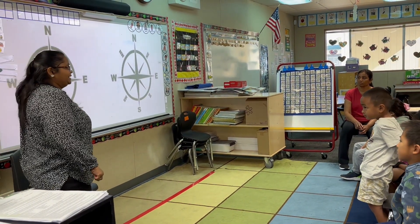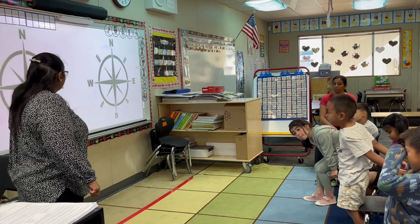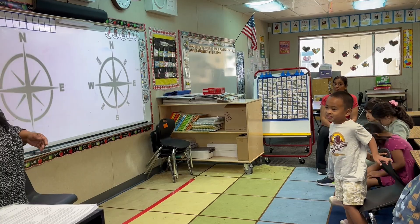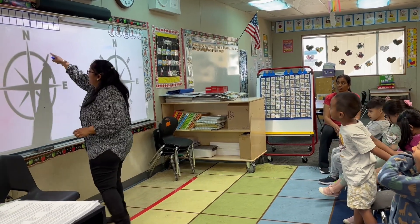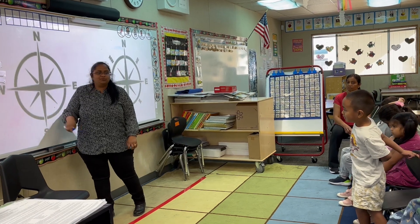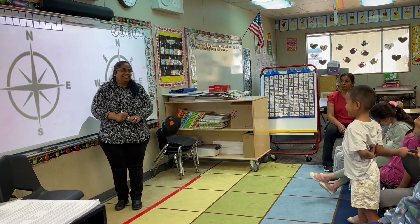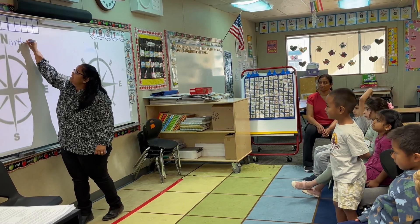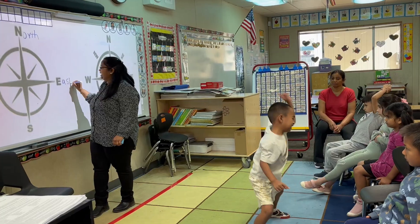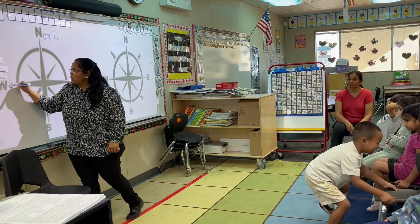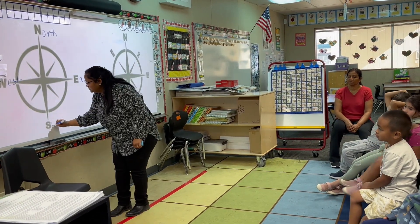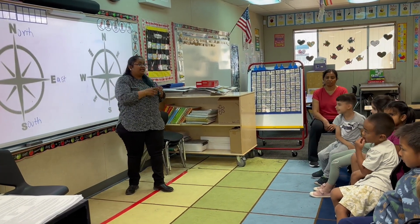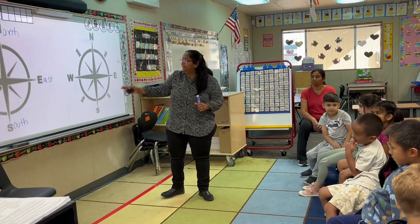Who can tell me what this is? What is this? It says N, E, W, and S. What does that mean? They are directions. North, East, West, and South. These are the four directions that we have, which helps us to find the directions to a place.